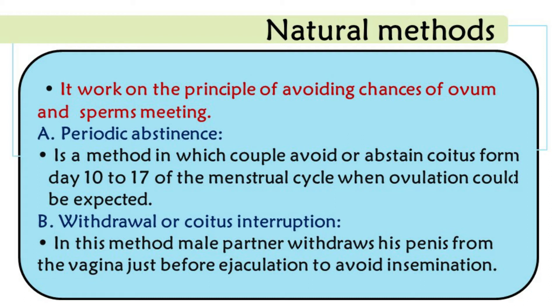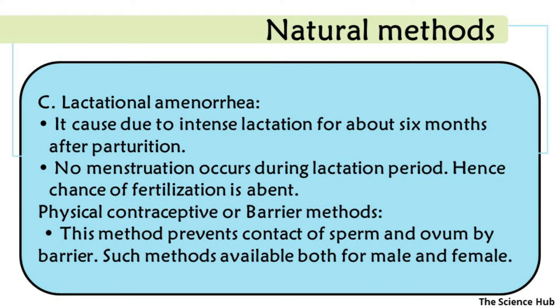Second, withdrawal or coitus interruptus: the male partner withdraws his penis from the vagina just before ejaculation to avoid insemination. Third, lactational amenorrhea: caused by intense lactation for about six months after parturition. No menstruation occurs during the lactation period, so the chance of fertilization is absent.